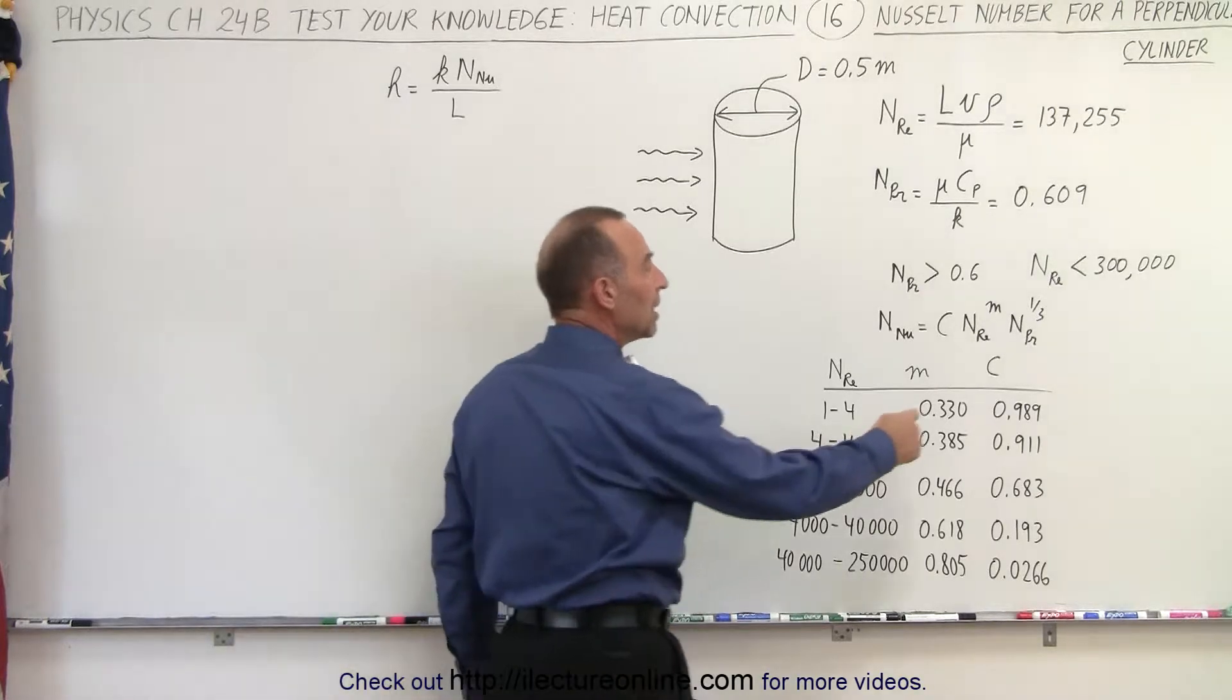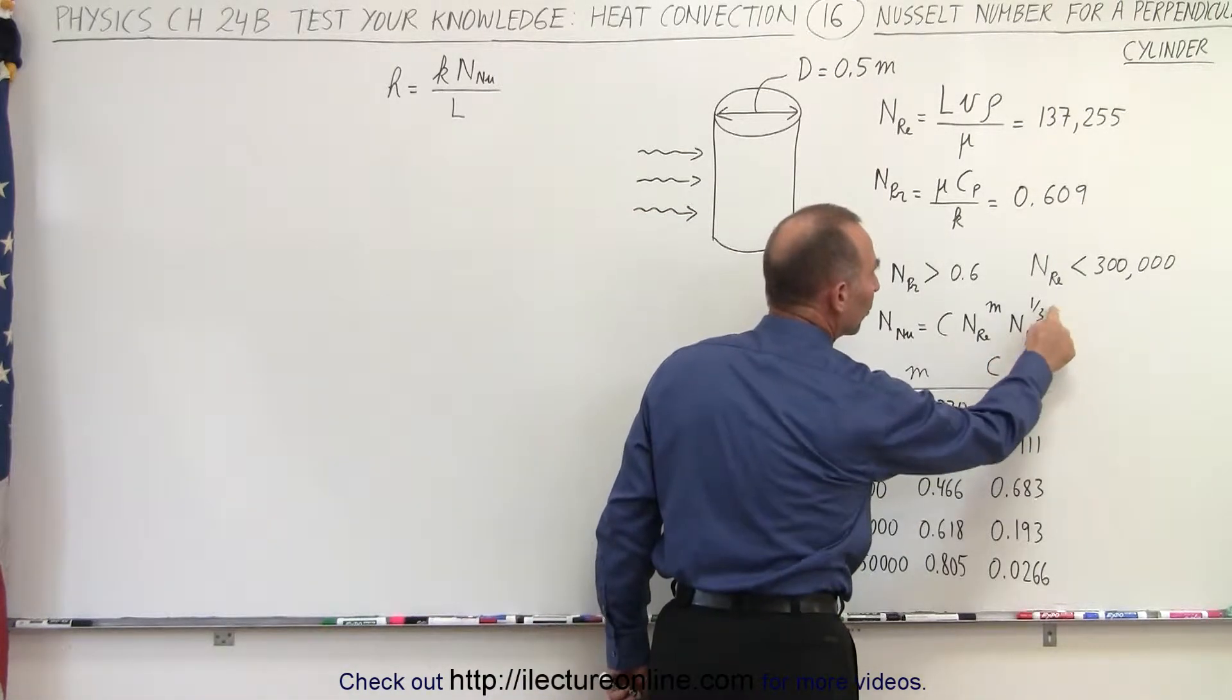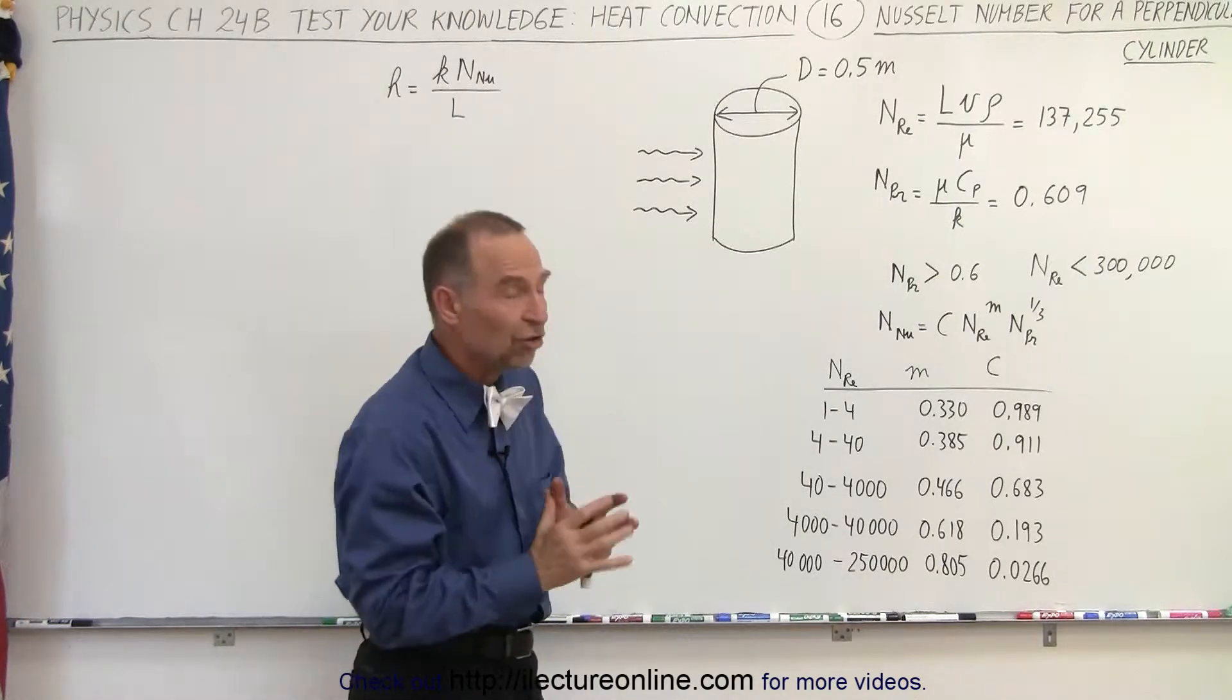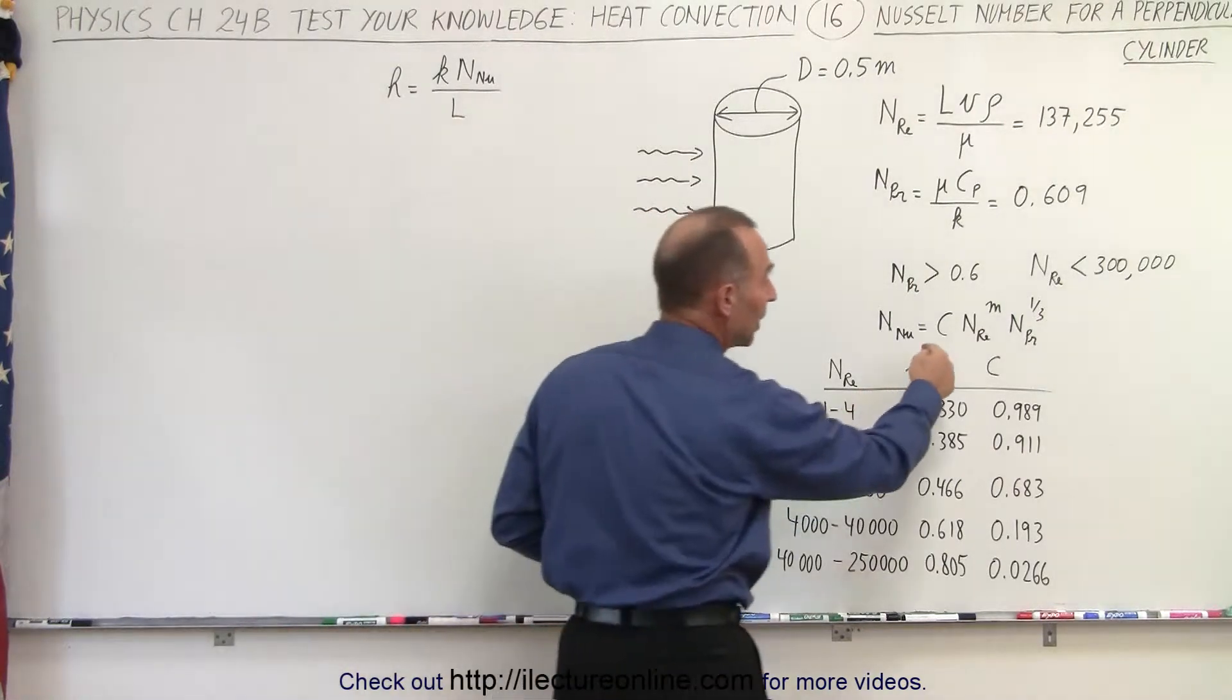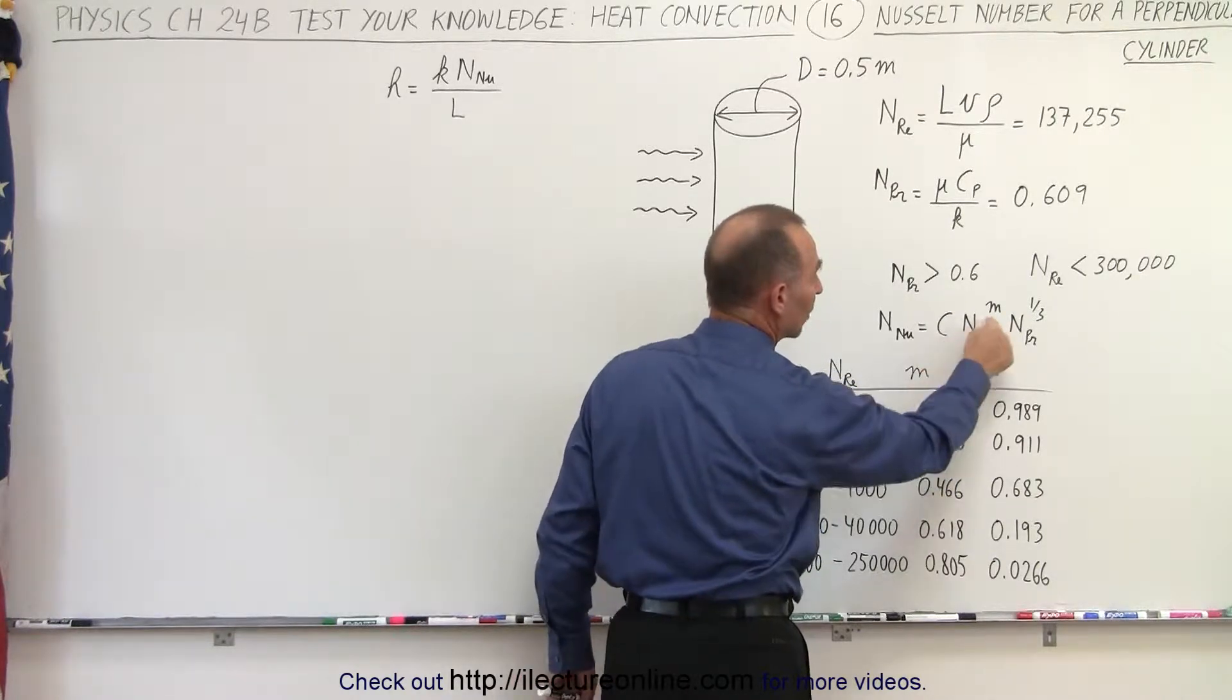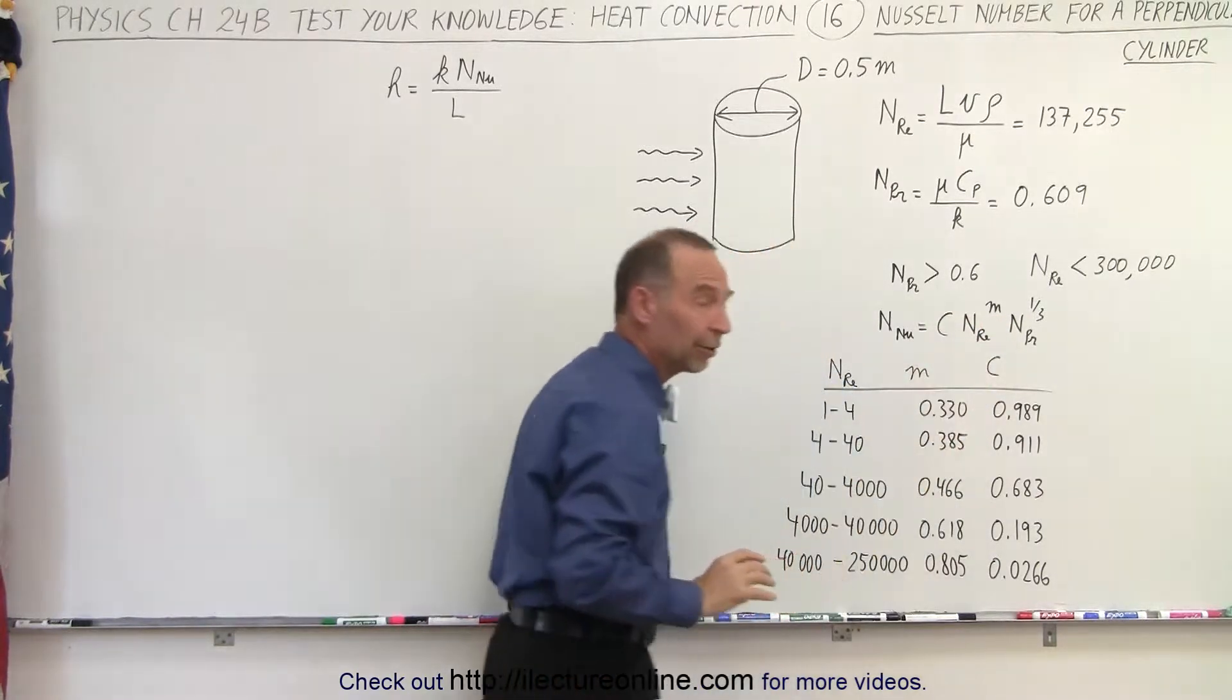So notice that the Prandtl number raised to one-third power always comes out to a number that's relatively close to one, and that doesn't change a lot. The biggest change is going to come from the Reynolds number, which then will command the constant here and the exponent. There could be a lot of variability there.